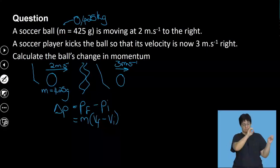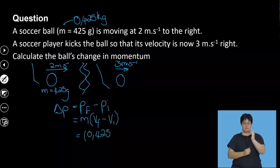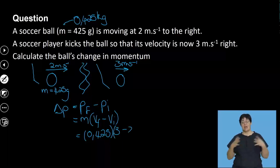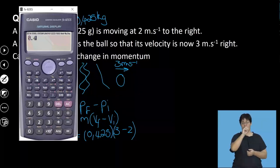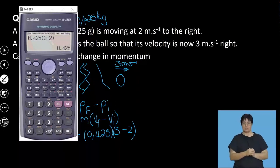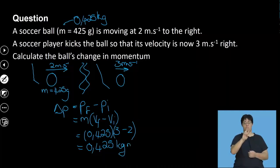Let's substitute in what I know. So I've got 0.425. Final velocity was 3, initial velocity was 2. On the calculator: 0.425 times, open bracket, 3 minus 2. We can't use the fraction, so we get 0.425. We get a positive answer of 0.425 kilogram meters per second.